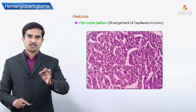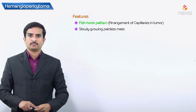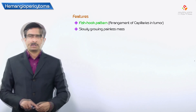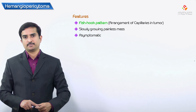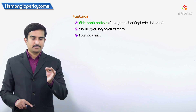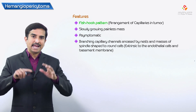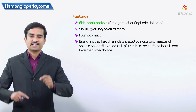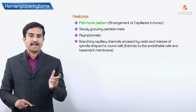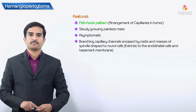The tumor is slowly growing as a painless mass, which is why the majority of cases are asymptomatic. It consists of branching capillary channels encased by nests and masses of spindle-shaped to round cells that are extrinsic to the endothelial cells and the basement membrane.